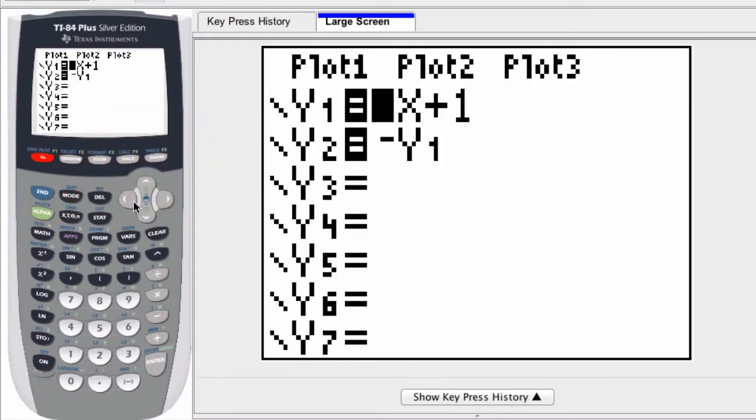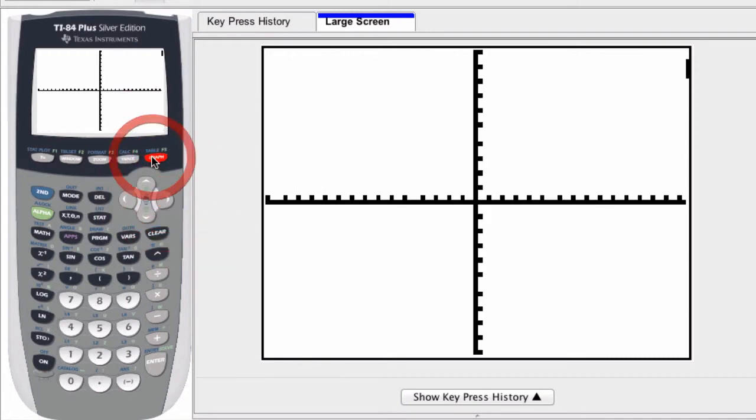If I want to deselect any of those two functions or any function that I have set up, I scroll over to the equal sign of the function I want to deselect and press enter, and then it's no longer highlighted. When I press graph, it will no longer be visible. So you do have that option of selecting and deselecting graphs.